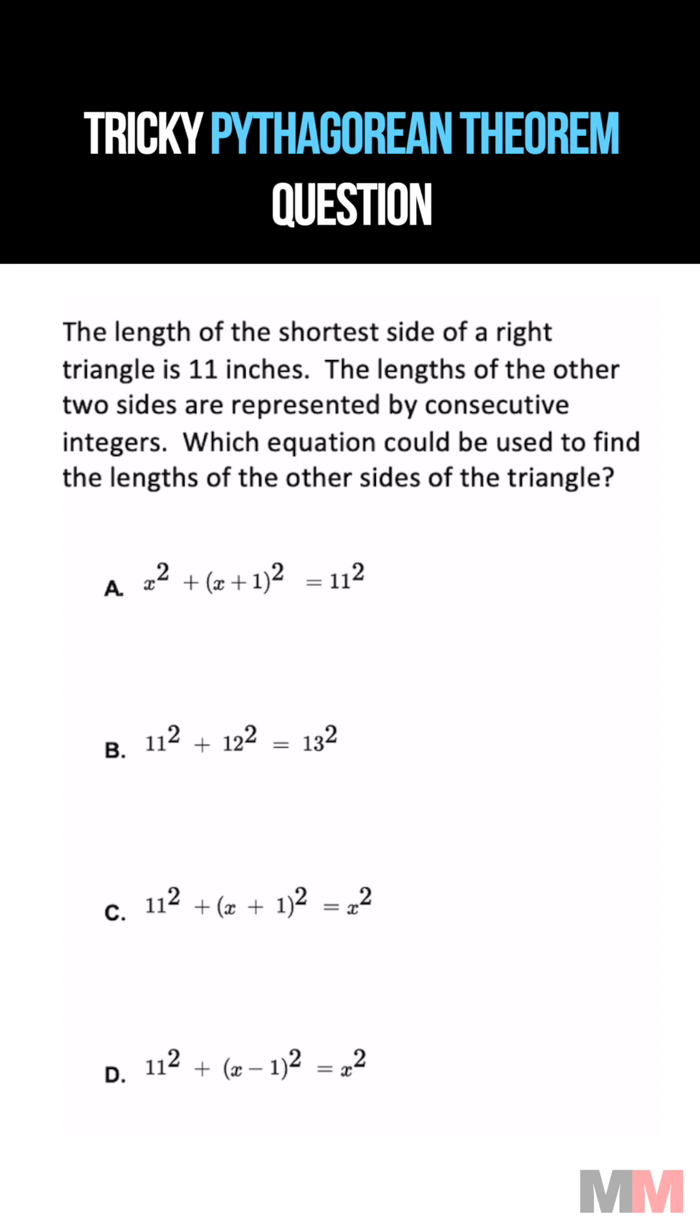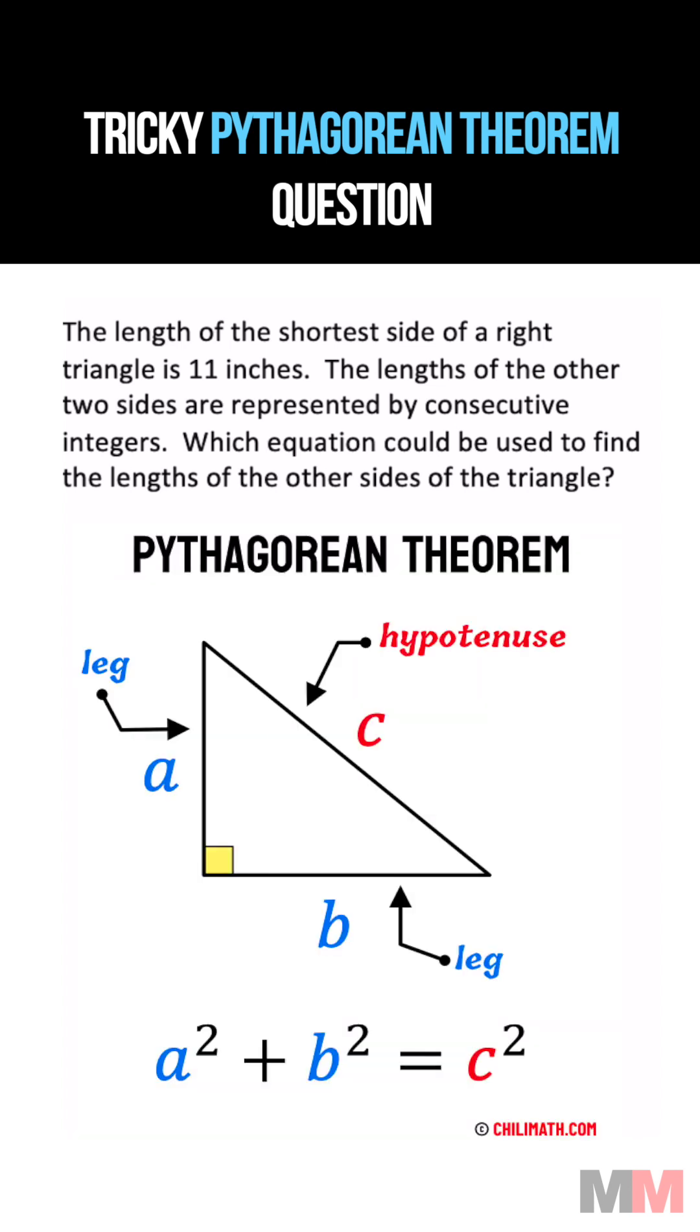The length of the shortest side of a right triangle is 11 inches. The lengths of the other two sides are represented by consecutive integers, which could be used to find the lengths of the other sides of the triangle. This is a Pythagorean theorem question.